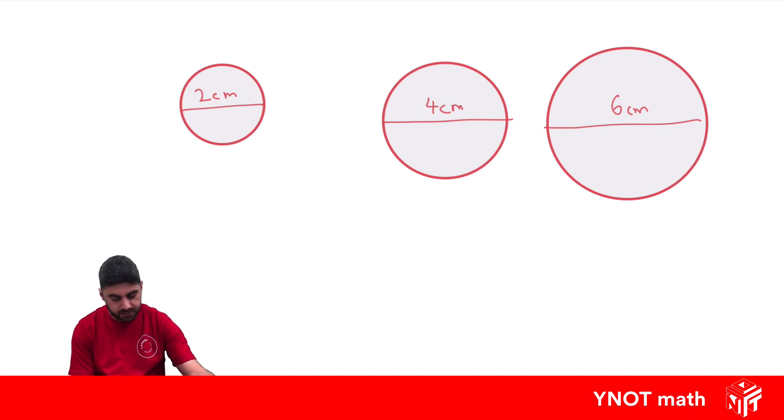You'd find you'd get the circumference of this one being about 6.28cm. So this is the distance all the way around. This one you'd get about 12.57cm, and this one you'd get 18.85cm.